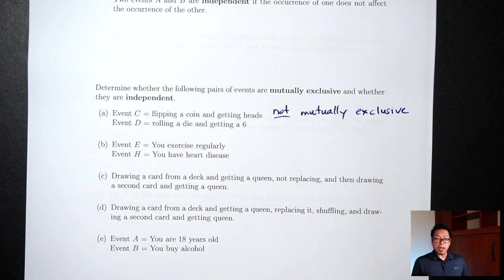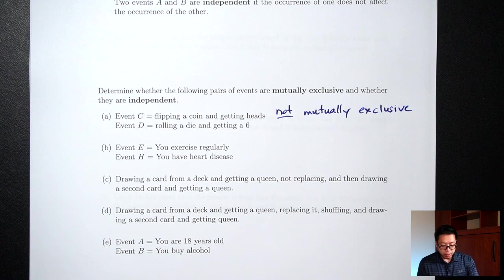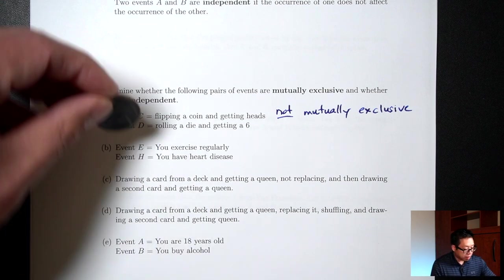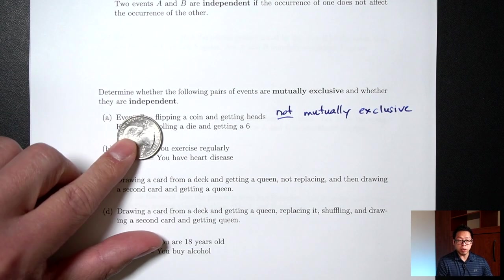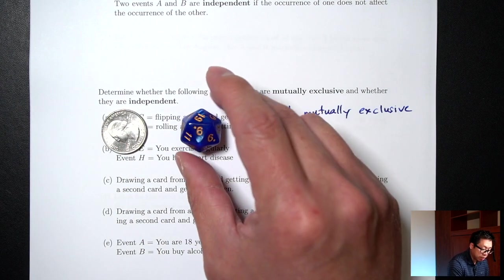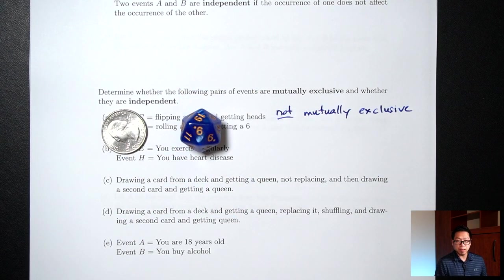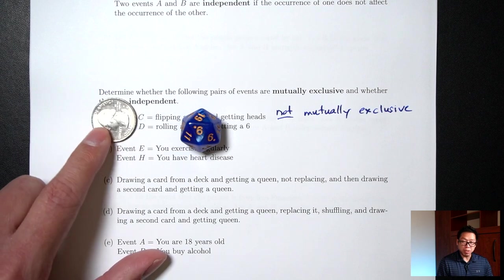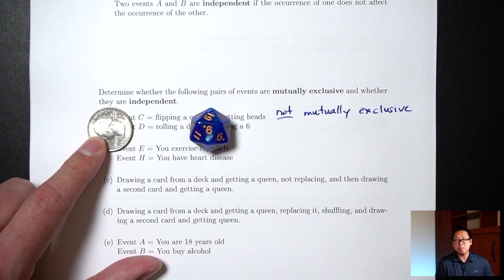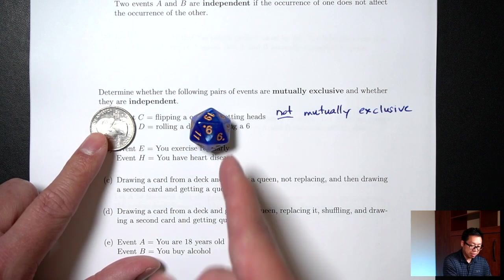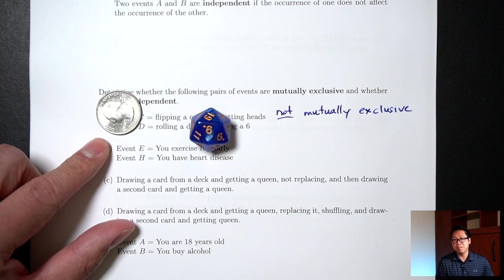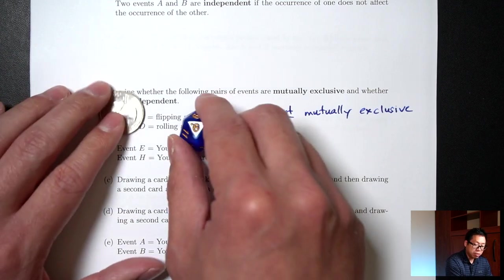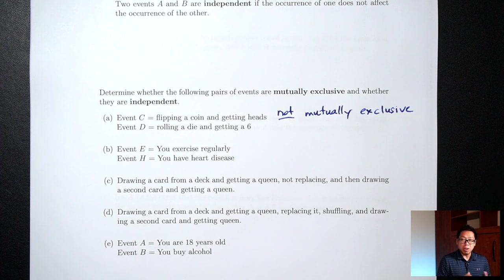The second question: are these two things independent? Does getting heads on a coin affect whether or not you get a six on a die? No, it does not. Getting heads on a coin doesn't affect whether or not you're going to get a six on a die. The die doesn't care what happens with the coin. So because they don't affect each other at all, this would be independent.